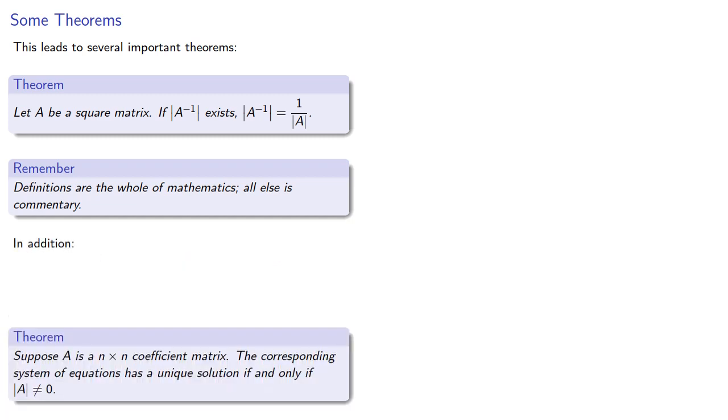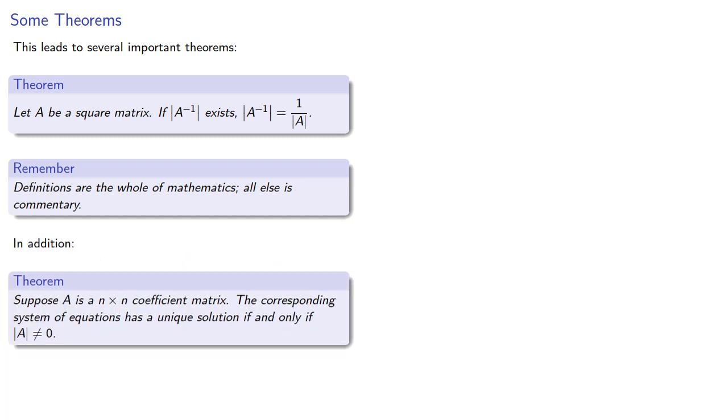In addition, suppose A is an n by n coefficient matrix. The corresponding system of equations has a unique solution if and only if the determinant of A is not 0.